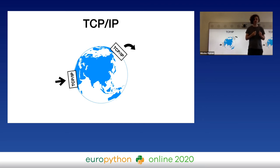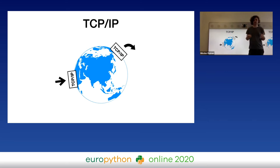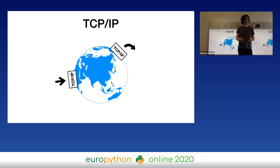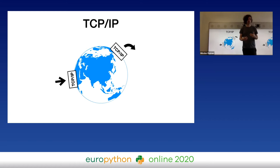TCP is like a magic box. You write something to the box, and on the other side of the internet somebody can read it from their box. If something gets lost on the way, TCP retransmits it. If something is delayed, TCP reorders it. The TCP layer handles various network glitches for you, so you get a reliable byte stream and don't have to care how it is implemented.